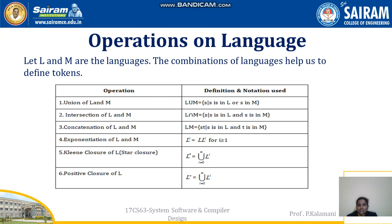Exponentiation of L means L^i, that is L · L^(i-1). Kleene closure of L is L*, representing zero or more instances. Positive closure of L is L+, representing one or more instances.